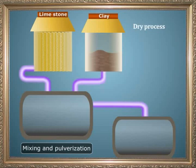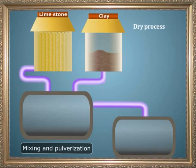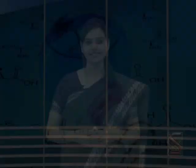You can also get the raw material through a dry process. In the dry process, the raw materials are first mixed in proper proportions. This mixture is then dried, pulverized, and made uniform. Pulverizing means crushing the mixture into small pieces, just like crushing limestone in the wet process. The uniform mixture is now called raw meal.